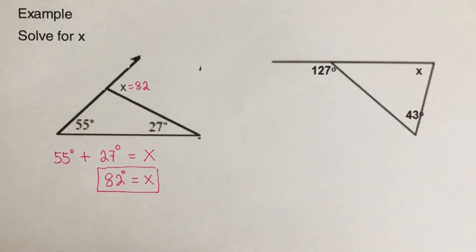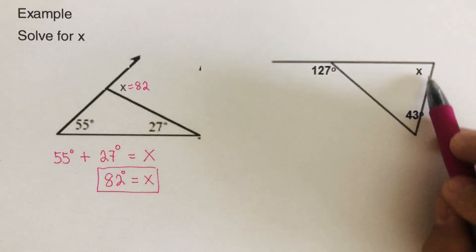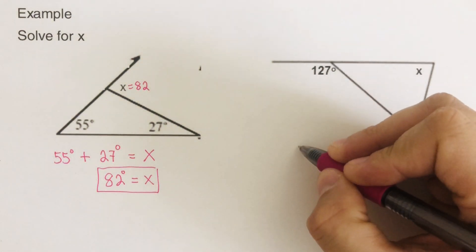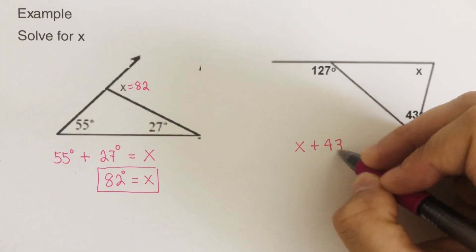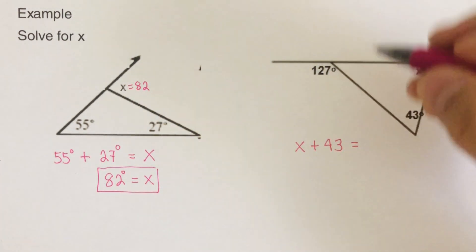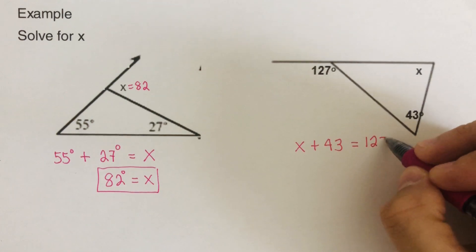Okay, what do you have for this? Let's go over this. We start with writing the interior angles first. So that is x plus 43 equals the exterior angle is 127 degrees.